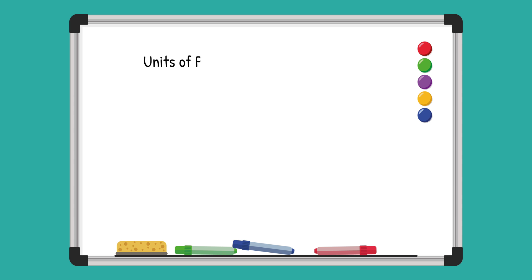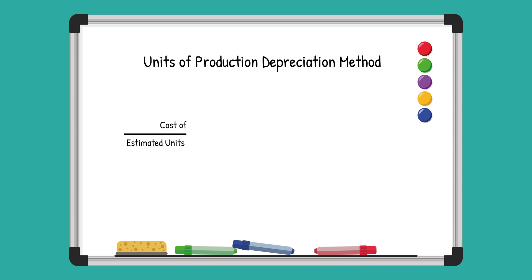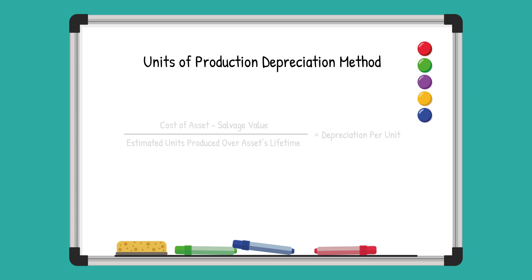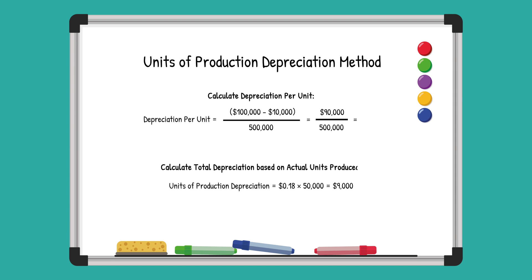To calculate depreciation using this method, we use the formula: cost minus salvage value, divided by total estimated production. The annual depreciation is then determined by multiplying that rate by the number of units actually produced in a year.